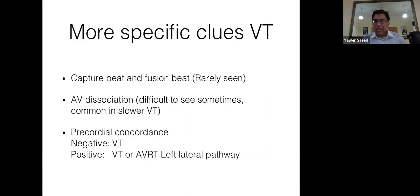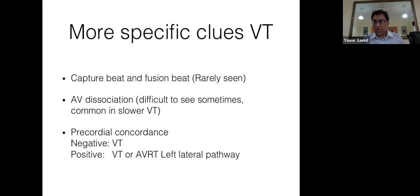Capture beats and fusion beats are rarely seen in VT unless it is very slow. AV dissociation is difficult to see. Precordial concordance — all leads negative or all positive in chest leads — is common in VT. The key takeaway: broad complex tachycardia, default diagnosis is VT until proven otherwise. This single principle will help enormously in clinical practice.